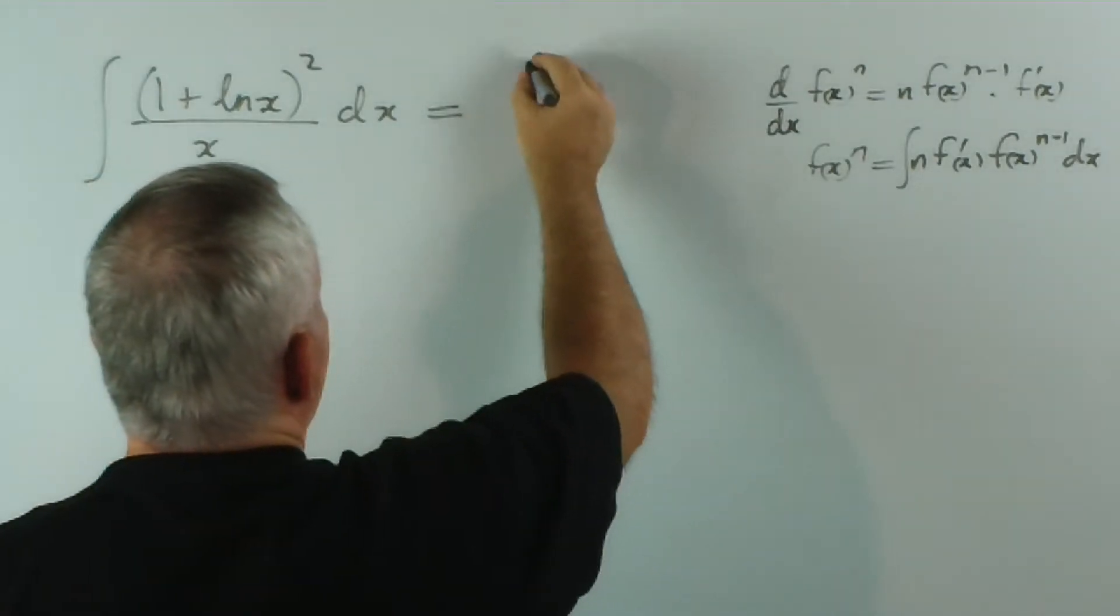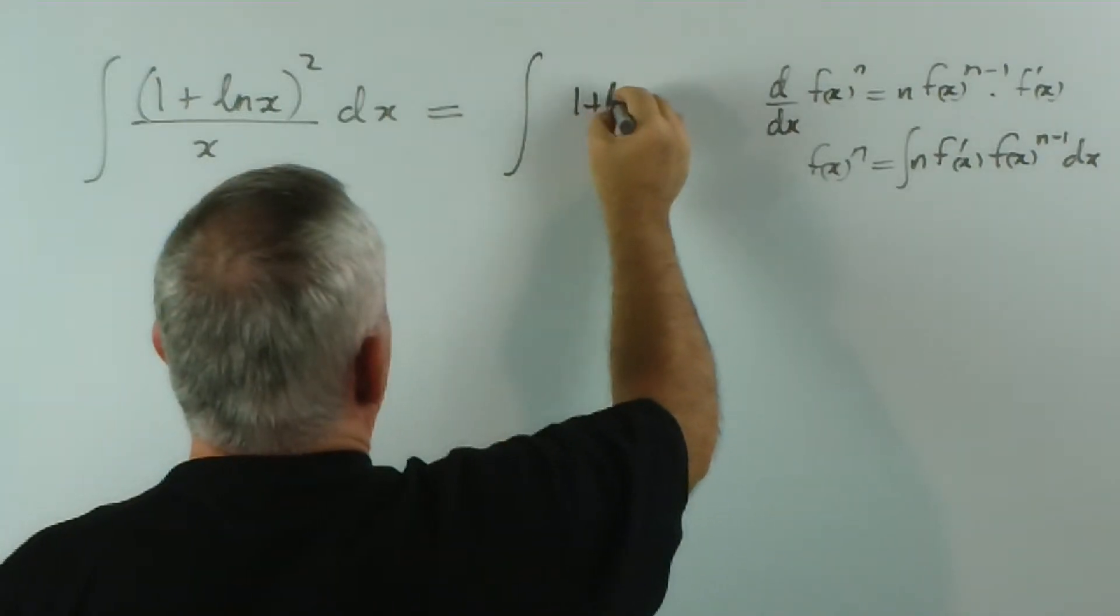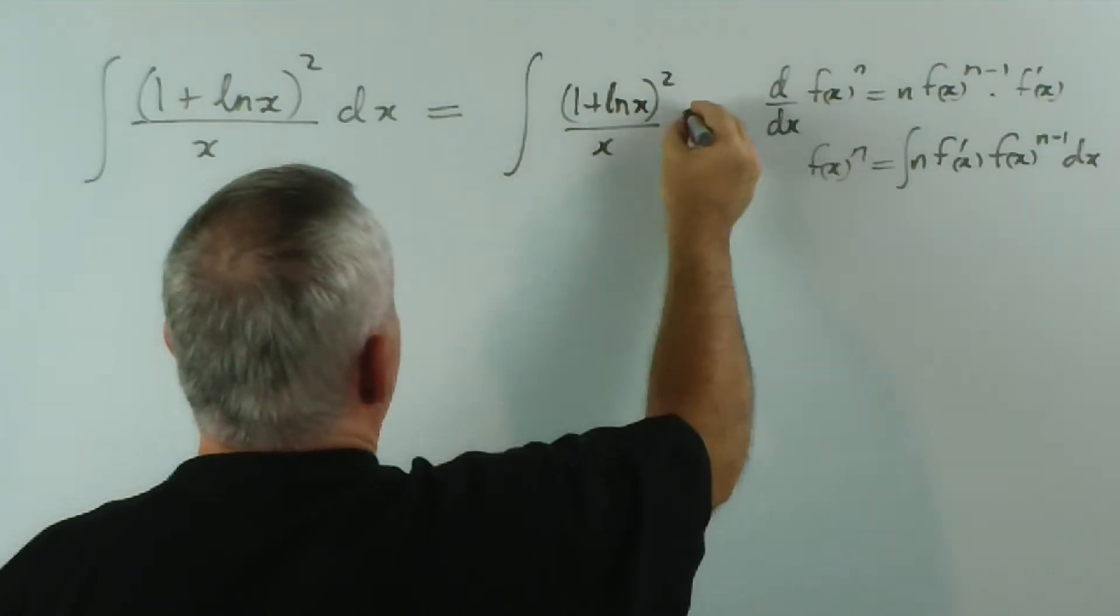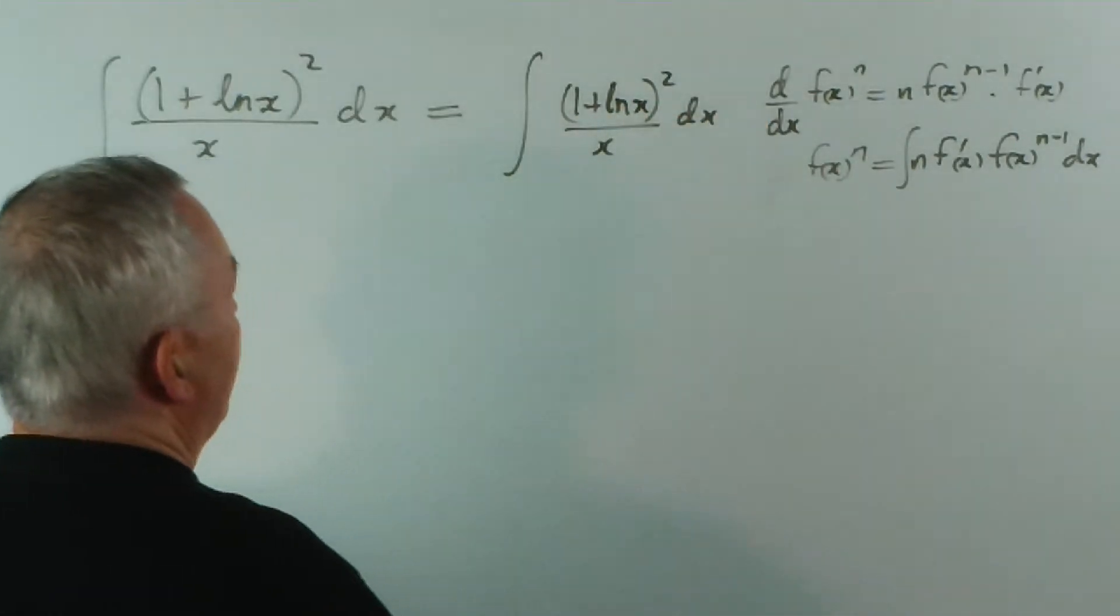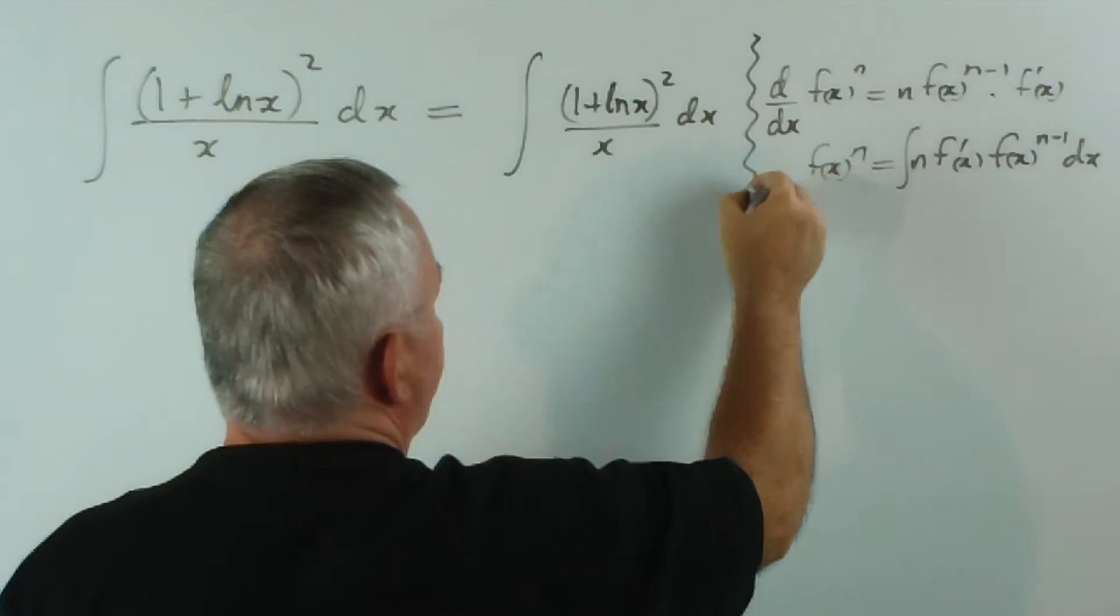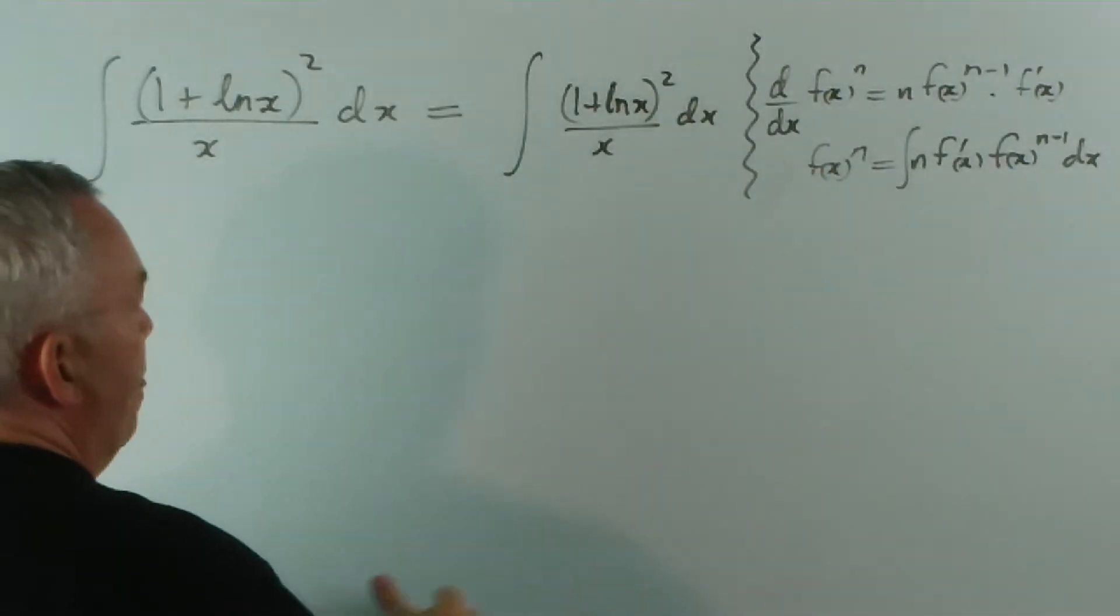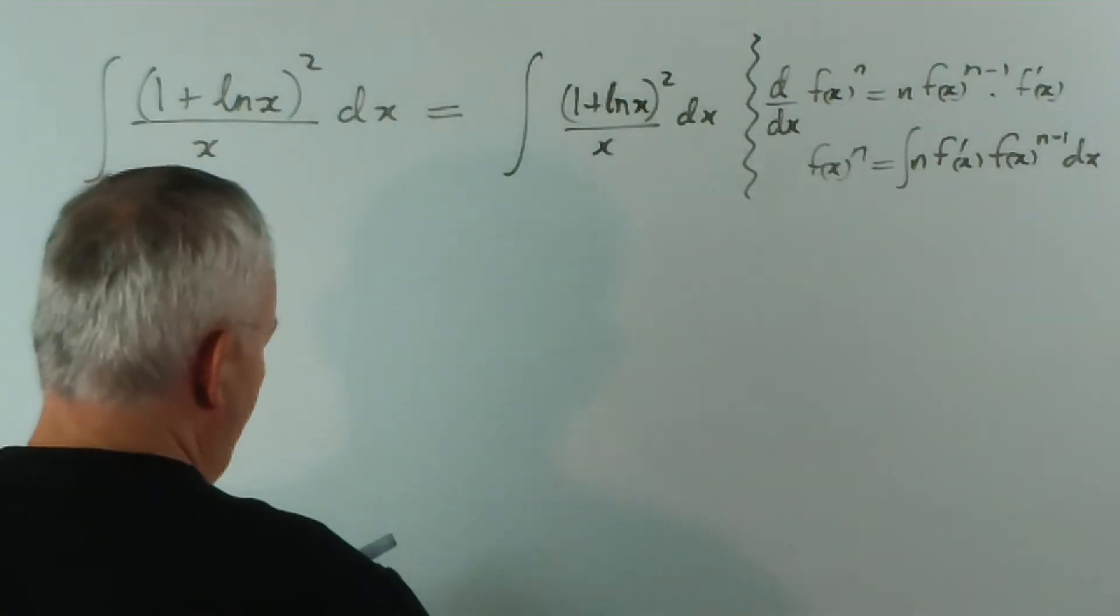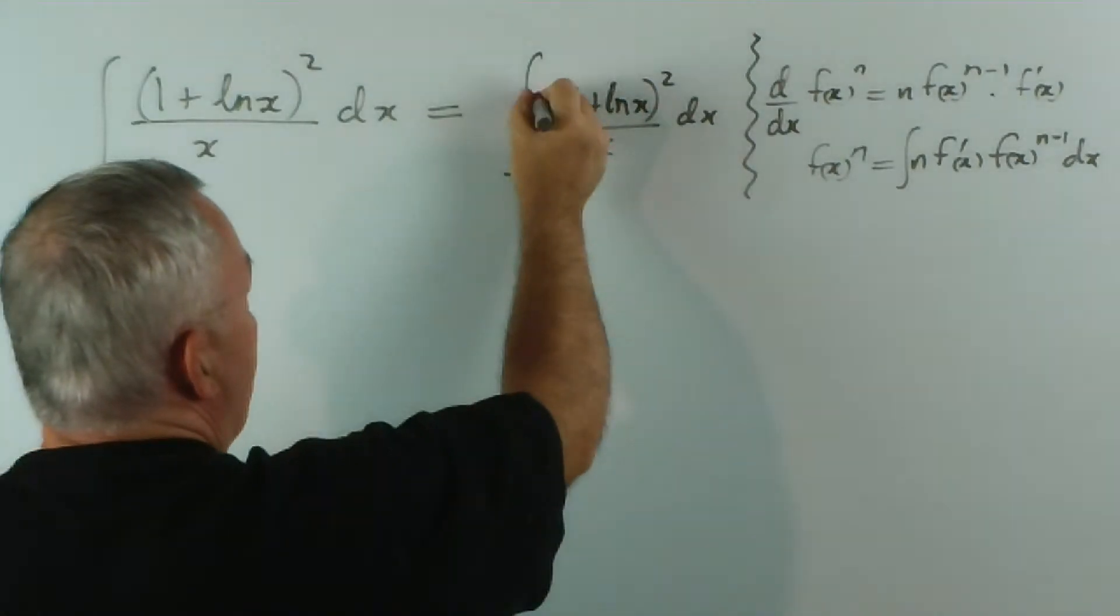I'll do it in two steps... 1 plus log x squared on x dx... just keep that separate. And using this pattern, we would like to have a 3 here.